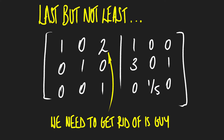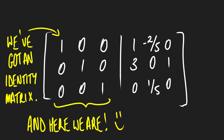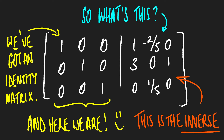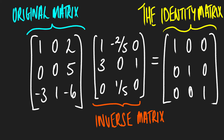The only thing left to do is get rid of that 2 up in the top right of our matrix. We can do that by replacing row one with row one minus two times row three — that eliminates the 2. As long as we do exactly the same thing to the right-hand side, what we're left with on the right-hand side — now that we've reached the identity matrix where our original matrix was — is our inverse. We can check that quickly by multiplying them together, and we get the identity matrix, because a matrix multiplied by its inverse gives the identity matrix.